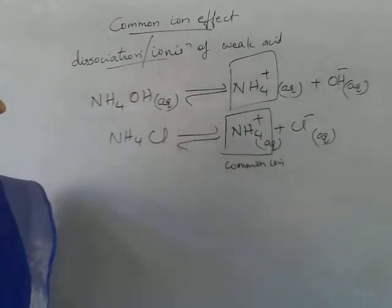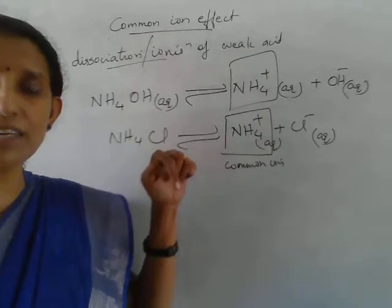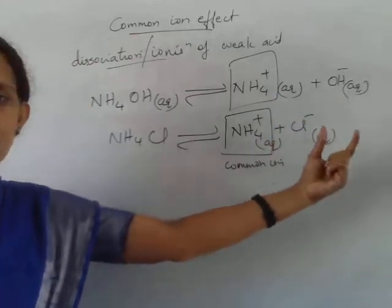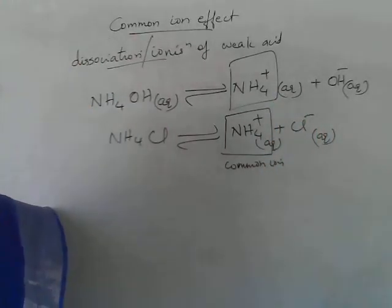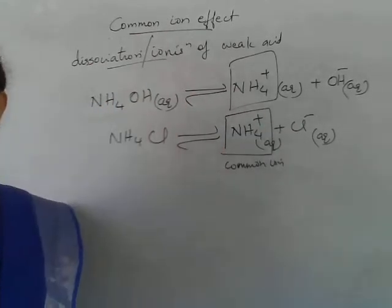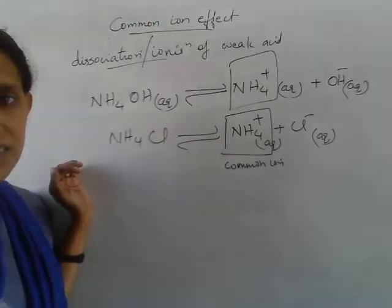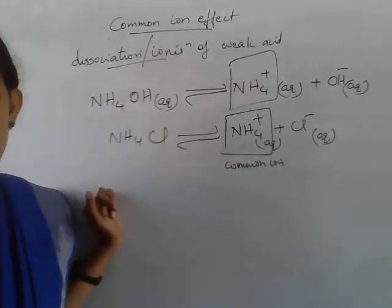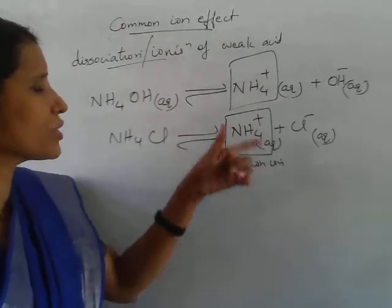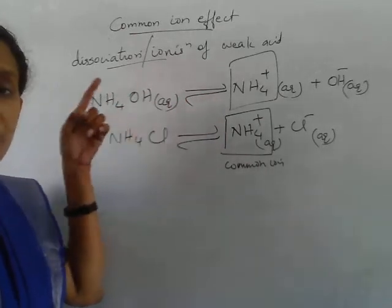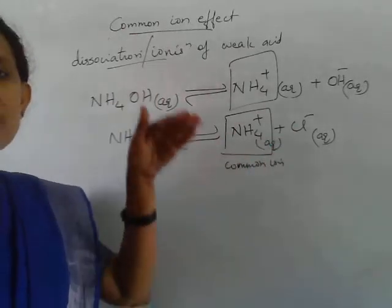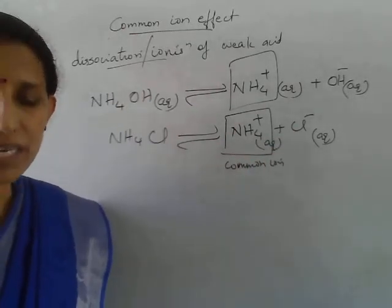What happens? Ammonium ion concentration will increase. The system will try to decrease ammonium concentration, so the equilibrium shifts in the backward direction. As a result, the dissociation of ammonium hydroxide is reduced — most of the ammonium hydroxide remains undissociated. This is the common ion effect. Whenever we add a common ion into the dissociation equilibrium of a weak acid or base, the dissociation of the acid or base is reduced. This is called the common ion effect — a direct application of Le Chatelier's principle.